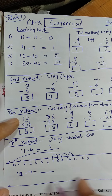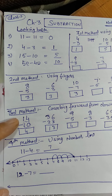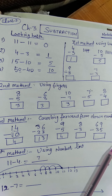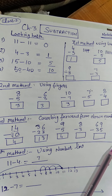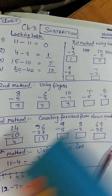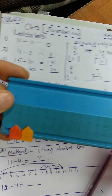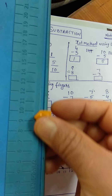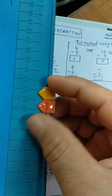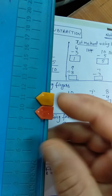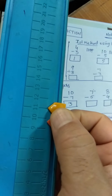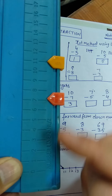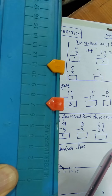You can do 12 minus 7 yourself in the same way. Now I will show you subtraction on the number line using a scale. For 11 minus 4: go from 0 to 11, place the pointer at 11, then bring it 4 steps back — 1 (at 10), 2, 3, 4 — and you reach 7. So the answer is 7. You can use this number scale as an activity for number line subtraction.